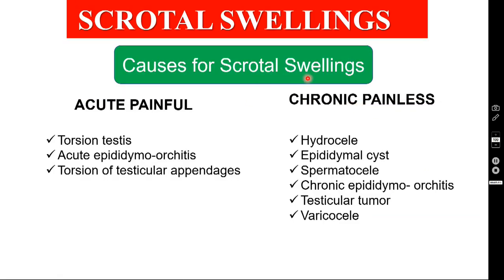What are the various causes for scrotal swellings? Broadly, you can divide them into acute painful conditions and chronic painless conditions. The acute painful conditions are torsion testis, acute epididymal orchitis, and torsion of testicular appendages. The chronic painless conditions can be divided into cystic swellings like hydrocele, epididymal cyst, spermatocele, and varicocele, and solid swellings like chronic epididymal orchitis and testicular tumor.